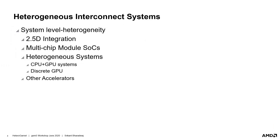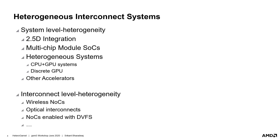Heterogeneity in modern systems is, however, not limited to 2.5D integrated architectures. Several other forms of architectures constitute heterogeneity in similar or varied forms. Heterogeneous systems such as CPU plus GPU architectures have sub-networks and multiple clock domains to operate the different accelerators. In addition to the system-level heterogeneity, modern systems could also bring in interconnect-level heterogeneity, in the form of modern wireless NOCs, optical physical links, and even DVFS within NOCs. Modeling and evaluating these heterogeneities require complex but flexible features within the interconnect simulation infrastructures.